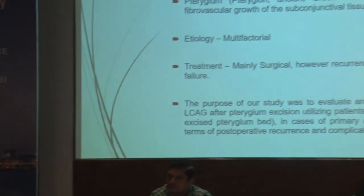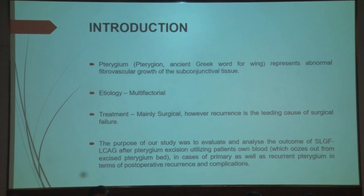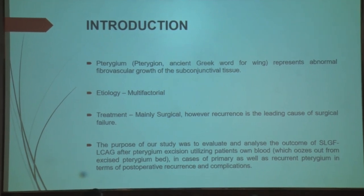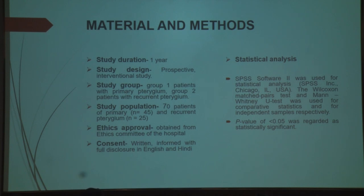Dr. Vikash Sharma presented on sutureless and glue-free limbal conjunctival autografting in primary and recurrent pterygium. Pterygium is a subconjunctival fibrovascular growth with multifactorial etiology, with UV exposure being significant. Recurrence is the leading cause of surgical failure. The study evaluated outcomes of sutureless glue-free limbal conjunctival autografting after pterygium excision. It was a one-year prospective interventional study at a Teshri Eye Care Center in Delhi, recruiting 70 patients — 45 primary and 25 recurrent pterygium. Statistical tests used were Wilcoxon matched-pairs test and Mann-Whitney U test; p-value less than 0.05 was significant.